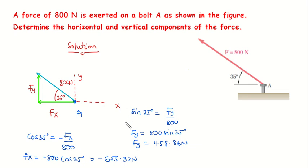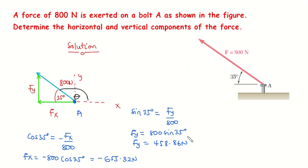Let's look at another way to solve this question. With the first method, you had to visually determine that the X component is negative and the Y component is positive. With this alternative method, instead of doing that, all you need to do is find the value of this angle theta.